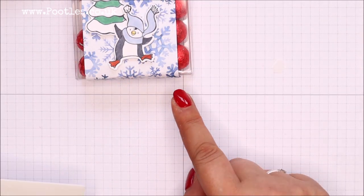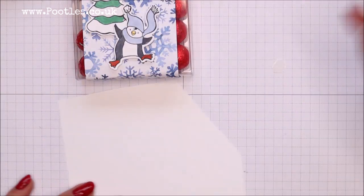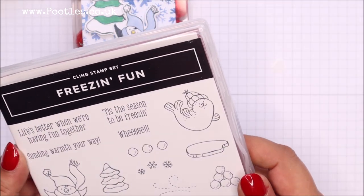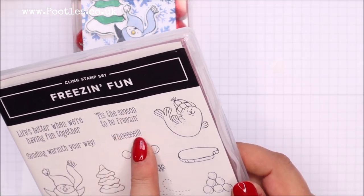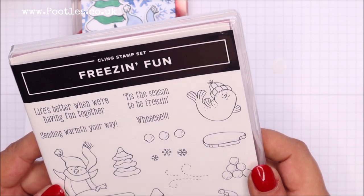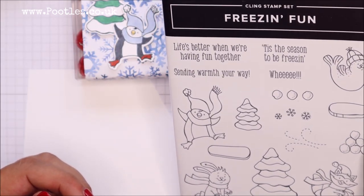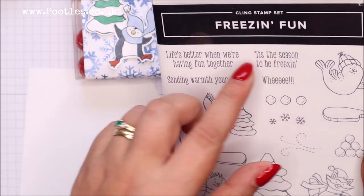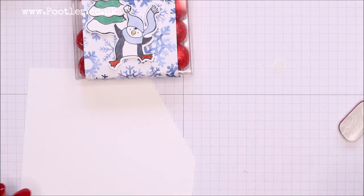He looks like he's having fun. That's all good. Right. What are my phrases? Life's better when we're having fun together. They're sending warmth your way. Whee. And tis the season to be freezing. Oh, I don't know. I think I'll go with the one I used before. Tis the season to be freezing. That's just cute. Okay.